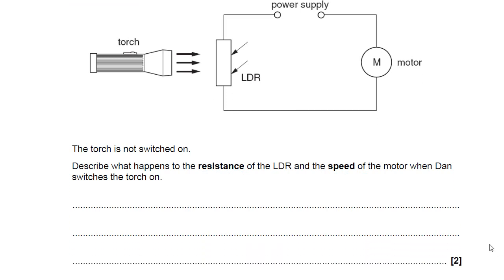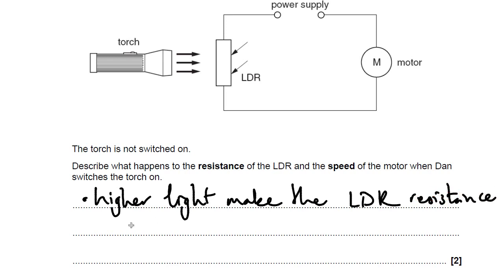Okay, well, an LDR, higher light means a lower resistance. So initially there's less light. The torch is switched on. There's more light. Higher light makes the LDR resistance lower.